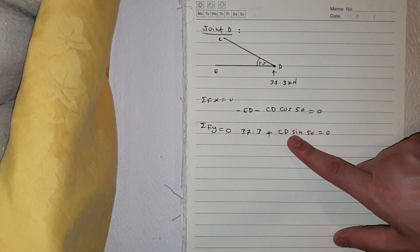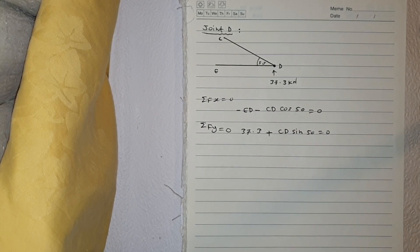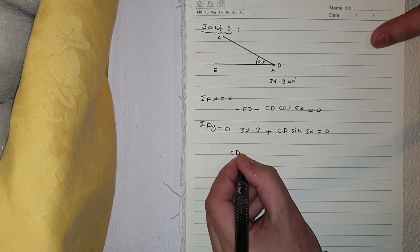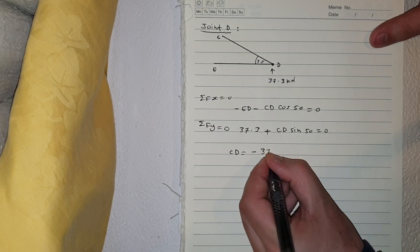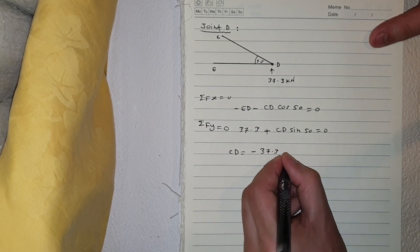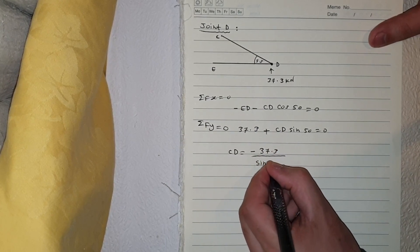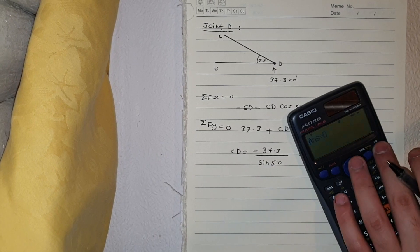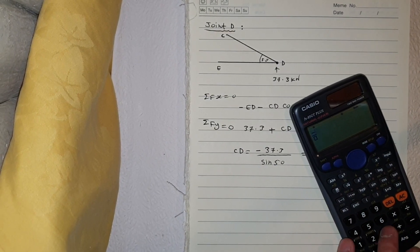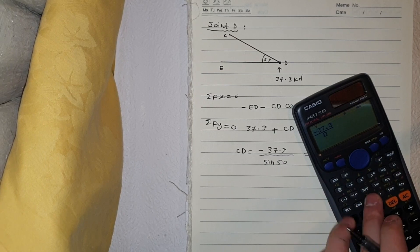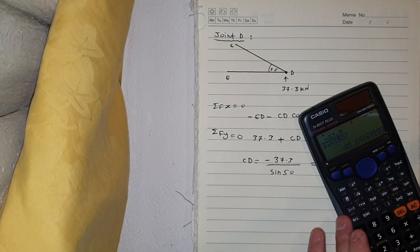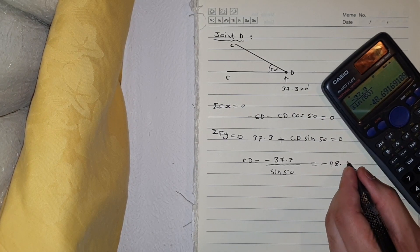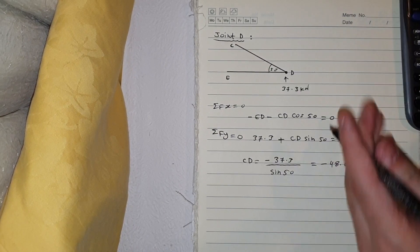First I'm going to find out the member CD, and then I can find the member ED. So CD will be equal to minus 37.3 divided by sine of 50 degrees, and that will be equal to minus 48.69 kilonewton. That's compression — that's the value of my CD.